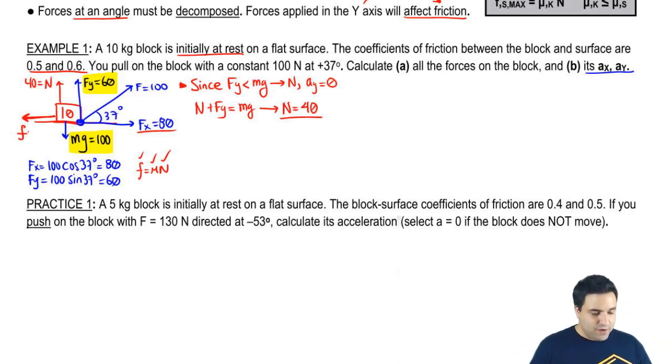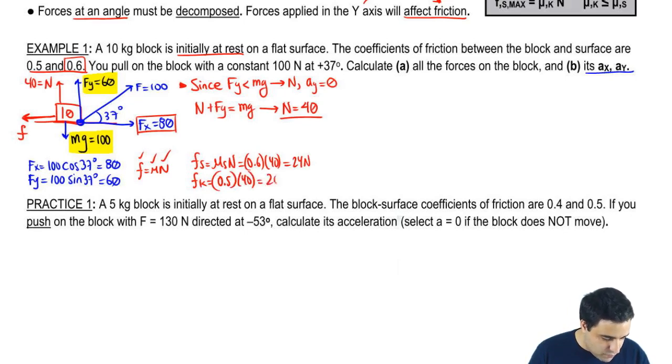Now, we have to figure out whether this friction is enough, whether this force here is enough for me to move. So one way to do that is I can just calculate friction static to see if this box will move at all. Friction static is μ static times normal. μ static is the bigger of the two here, so it's 0.6 times normal, which is 40. This is 24. Let me calculate kinetic real quick. Kinetic is 0.5 times 40, so it's 20.